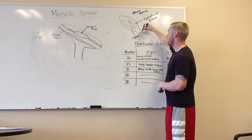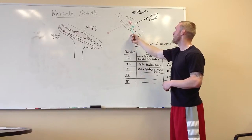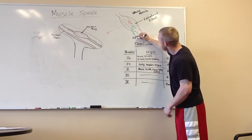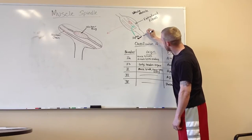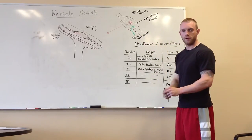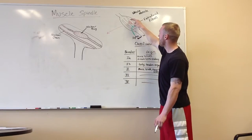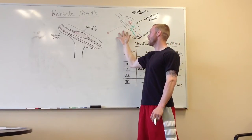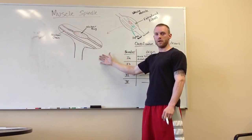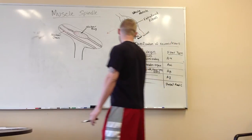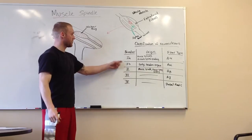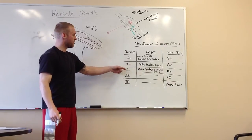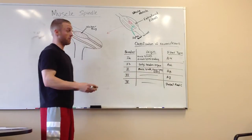So our whole muscle is going to be innervated by our alpha motor neurons. And this little red hole right here is just me bringing the muscle spindle out of the muscle. And then here on the right-hand side of the board is the classification of all the neurons and fibers, your type 1a, b2, all the ones that we learned already.